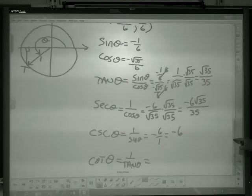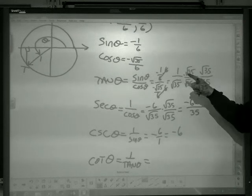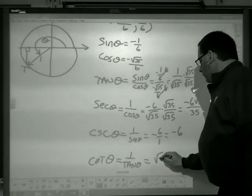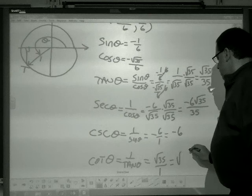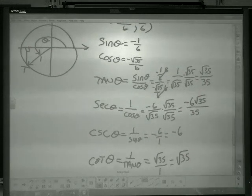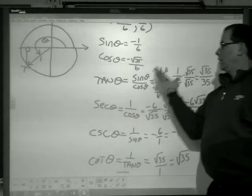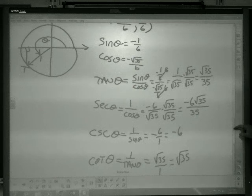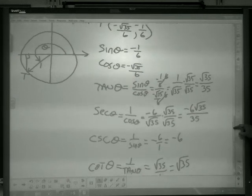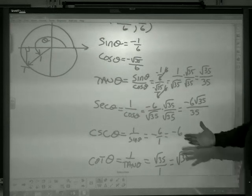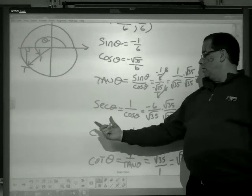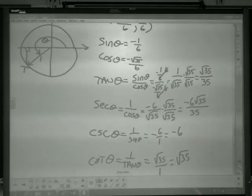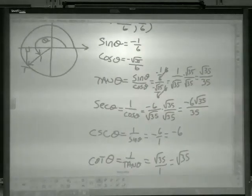And, the cotangent is the reciprocal of tangent. Well, this was tangent before we had to rationalize it. So, if I flip that, I get the square root of 35 over 1, which is just the square root of 35. So, that's how you can find reciprocal trig functions. They are just the reciprocal of sine, cosine, and tangent. So the biggest thing you have to remember here is secant goes with cosine, cosecant goes with sine, and cotangent is just the reciprocal of tangent. And, that's it for reciprocal trig functions.